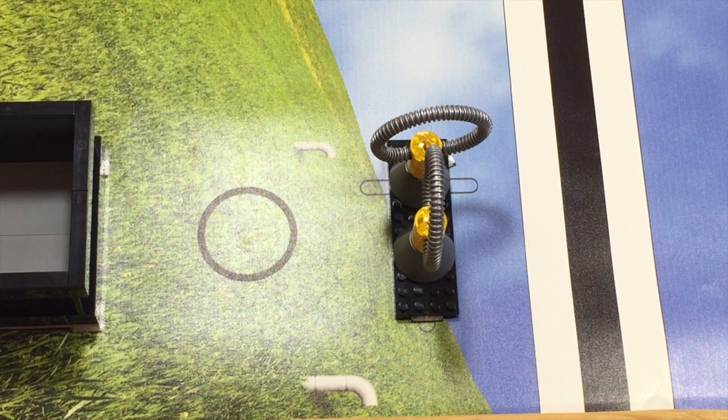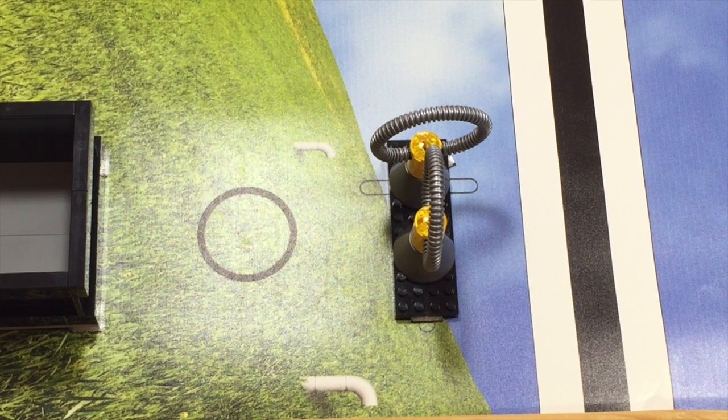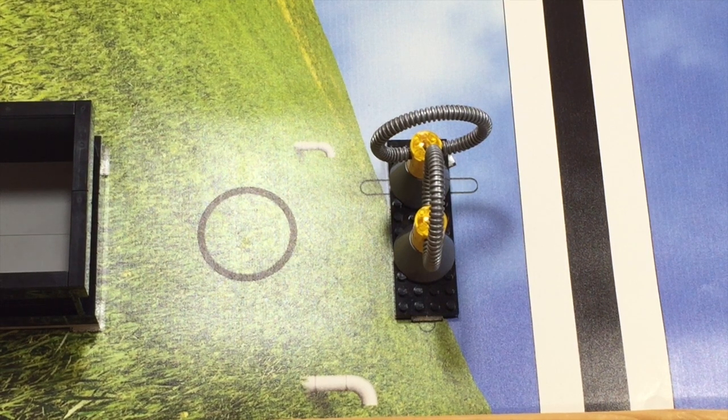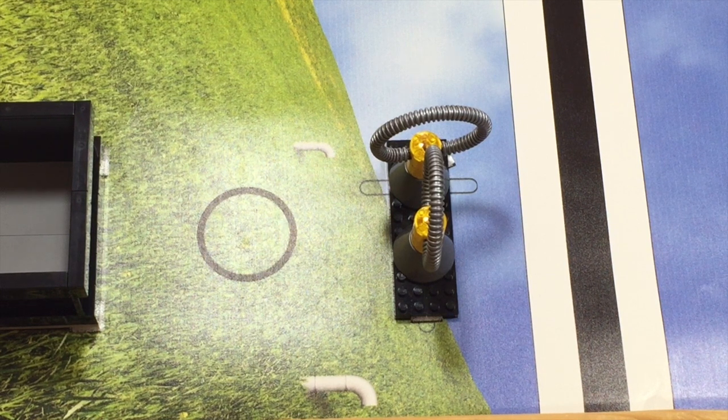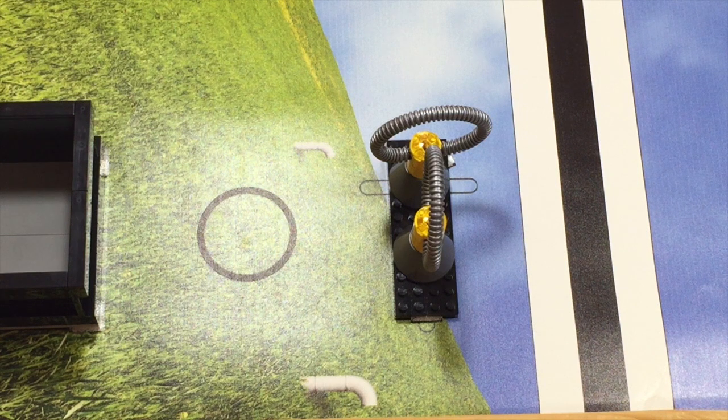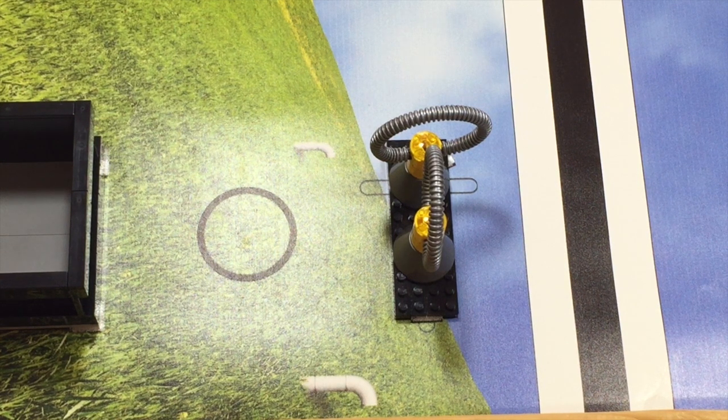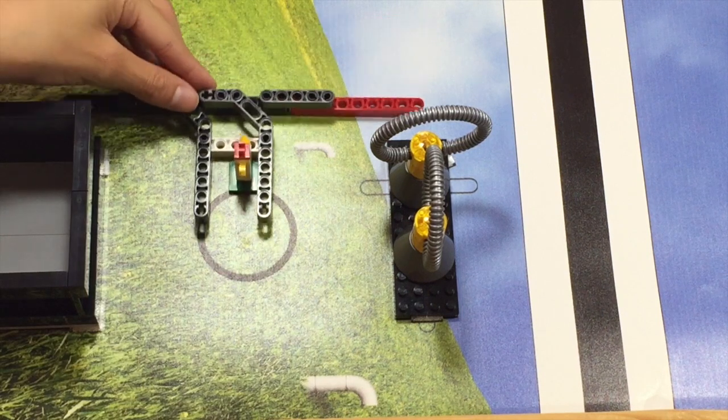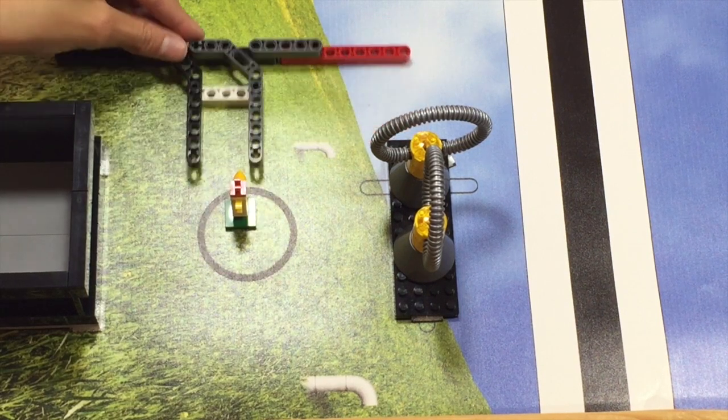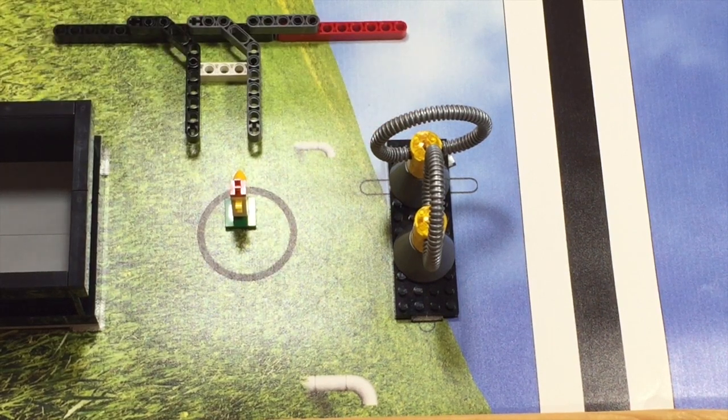Putting the chicken in the small circle is difficult because the circle is so small that you have to be very accurate. To put it in accurately, you can use the mission models on either side to align yourself, or the lines. You can use an attachment like this that aligns with the mission models, puts the chicken in, and then you can back out again.